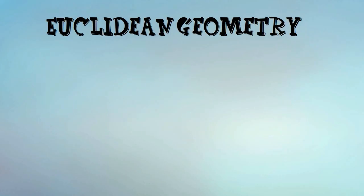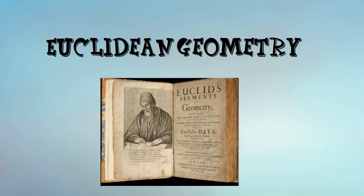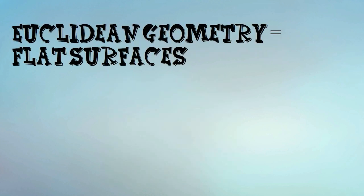Euclidean Geometry is the study of geometry based on definitions, terms, and the assumptions of the mathematician Euclid. It has been described as the geometry of flat surfaces.